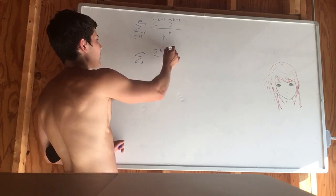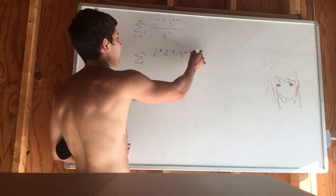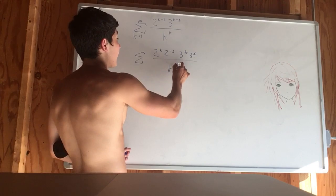So this would be 2 to the k times 2 to the negative 1 times 3 to the k times 3 to the 1. And we have this over k to the k.